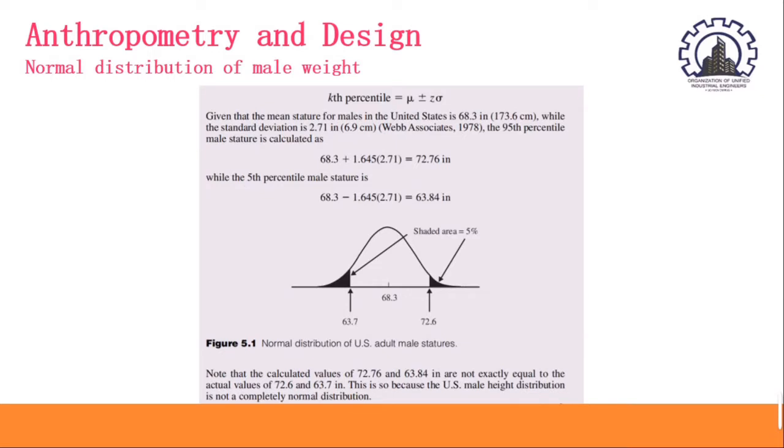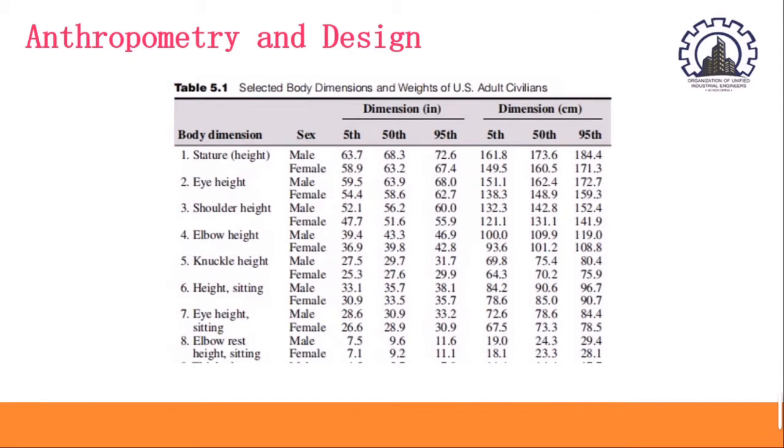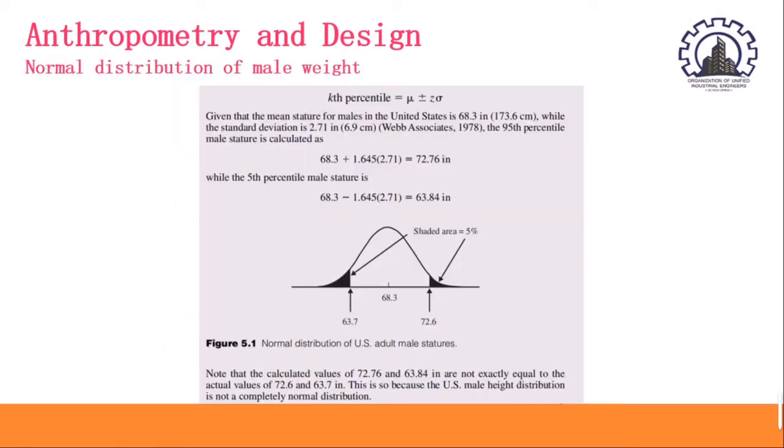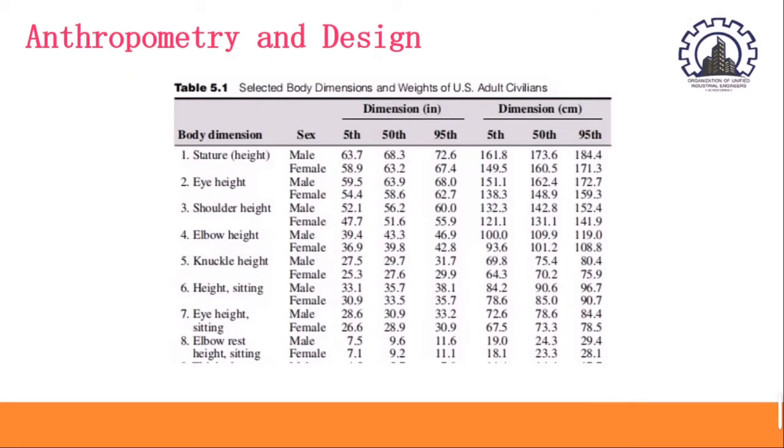Given that the measure of stature for males in the U.S. is 68.3, the 50th percentile, while the standard deviation is 2.71 given, or 6.9 cm, according to Webb Associates in 1978, the 95th percentile male stature is calculated as 68.3, which is our 50th percentile of the male stature, plus the 1.645 z-score times 2.71, which is the given standard deviation. And it is equal to 72.76 inches, which is close to our table in the stature in the 95th percentile, which is 72.6.